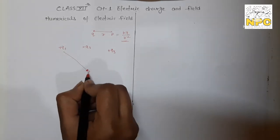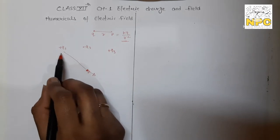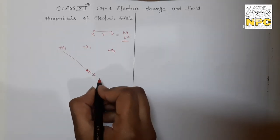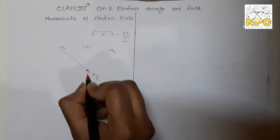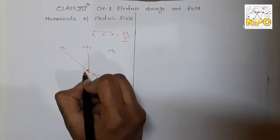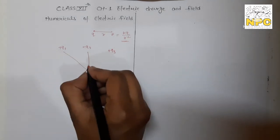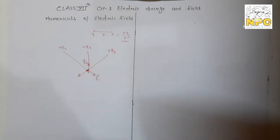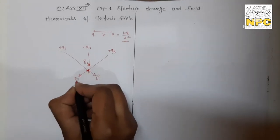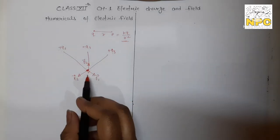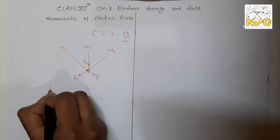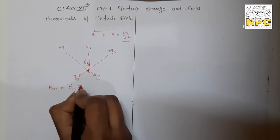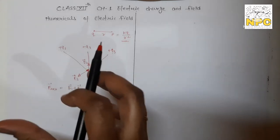E1 direction: since Q1 is positive, electric field is always away from the charge. E2 is due to negative Q2, so it is towards the charge. E3 is due to positive Q3, so it is away from the charge. So the net electric field E_net = E1 + E2 + E3. This is the vector sum of all three electric fields.